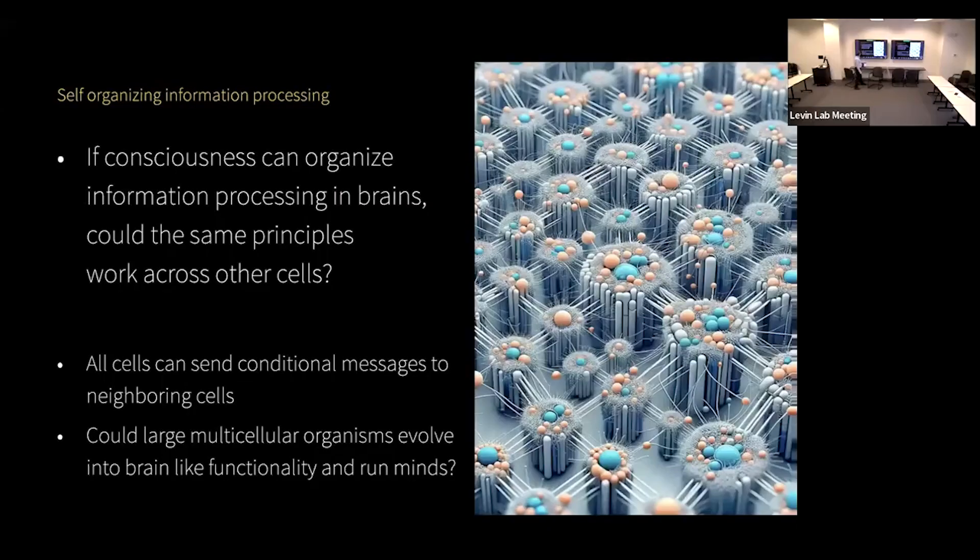Consciousness could be the principle that organizes information processing in brains. These same principles could work across other cells as well when the organism organizes itself in its information processing.